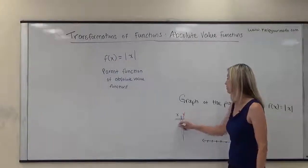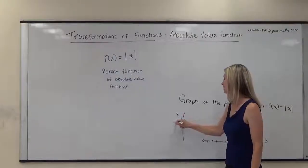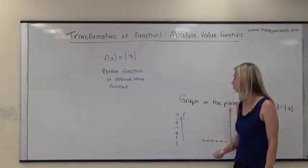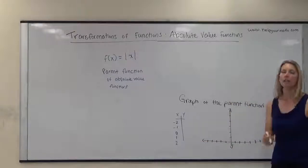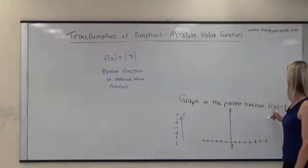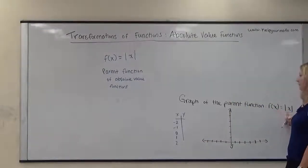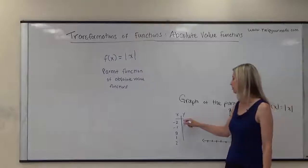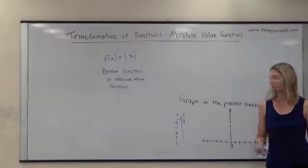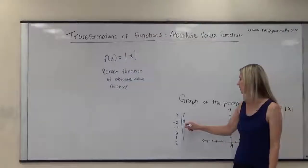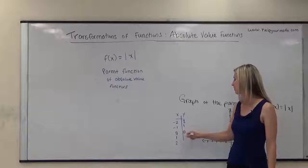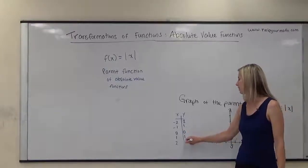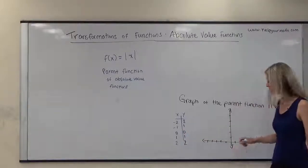For this table of values I would suggest using negative 2, negative 1, 0, 1, and 2 for x. If we plug in negative 2, the absolute value of negative 2 is 2. The absolute value of negative 1 is 1, the absolute value of 0 is 0, the absolute value of 1 is 1, and the absolute value of 2 is 2.